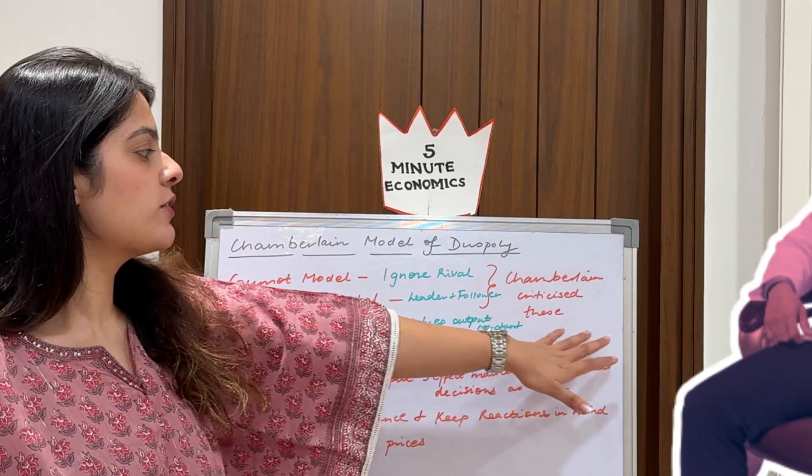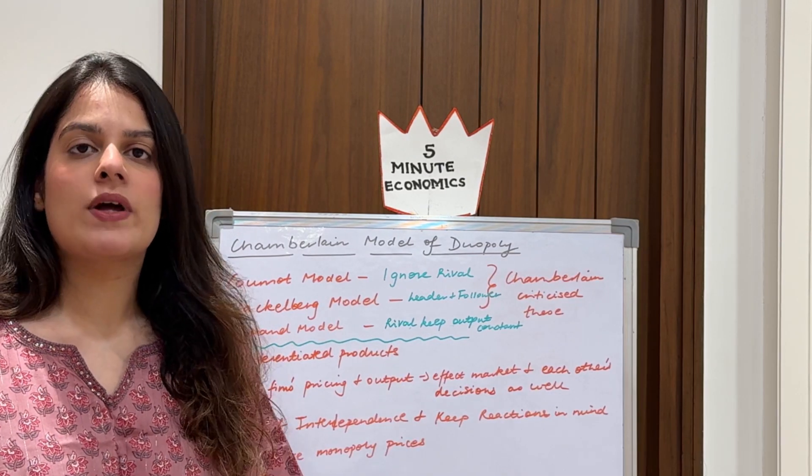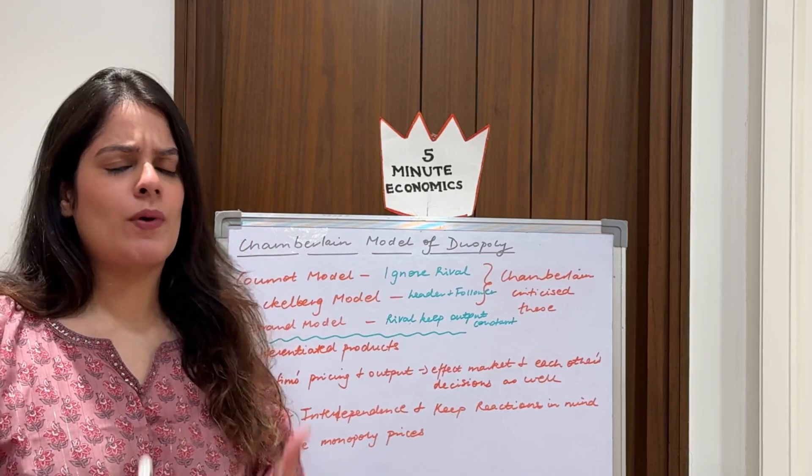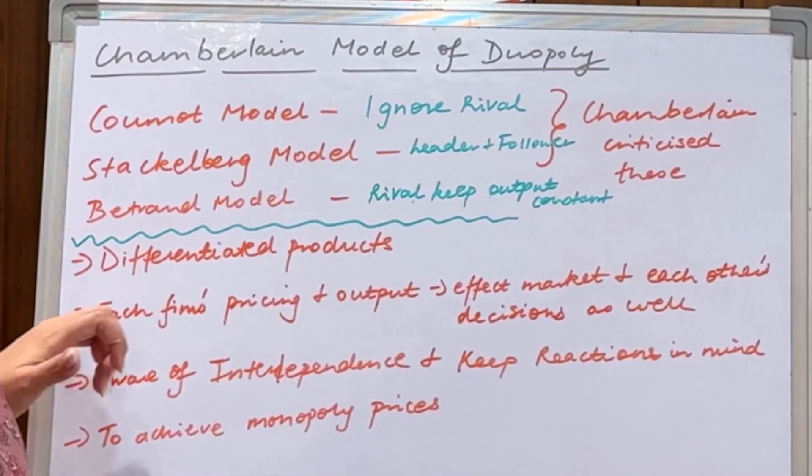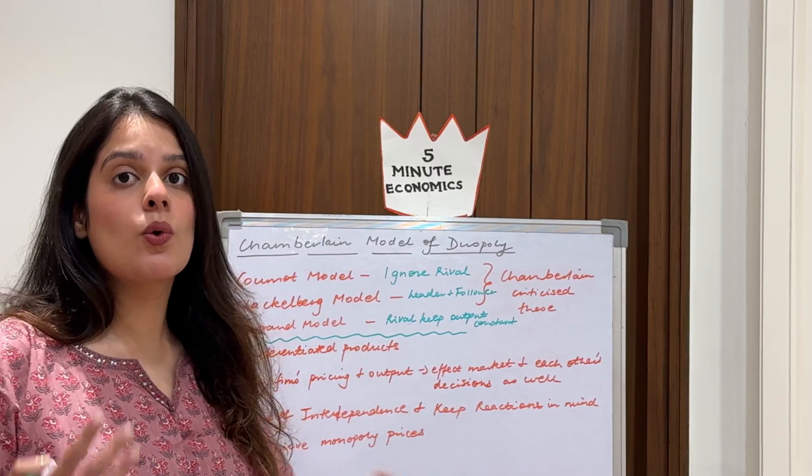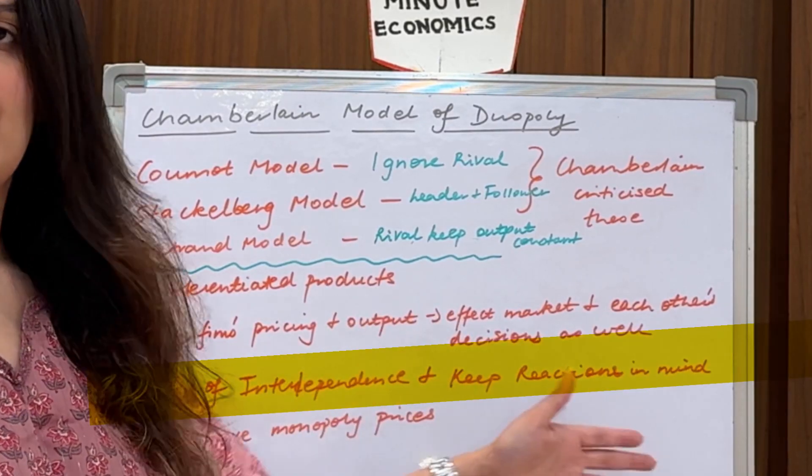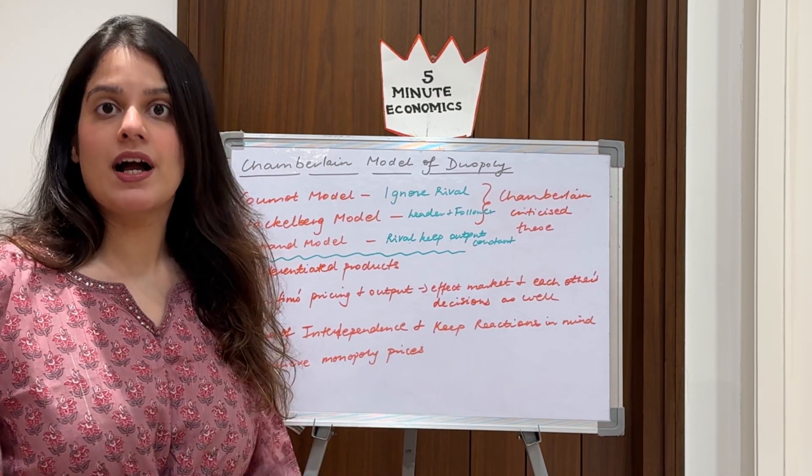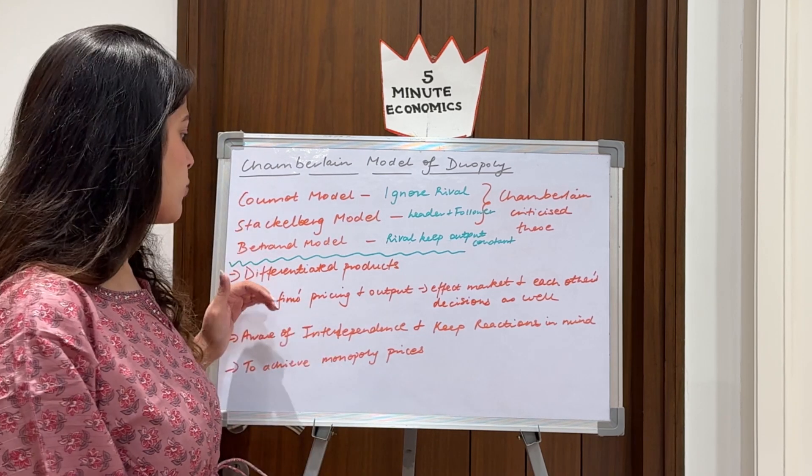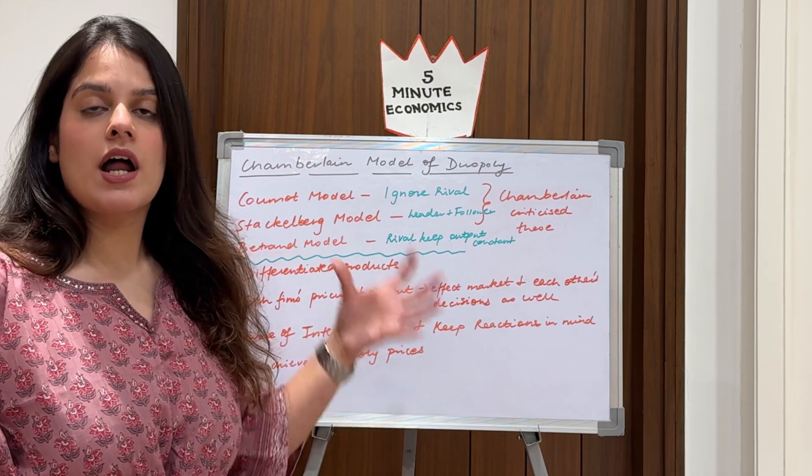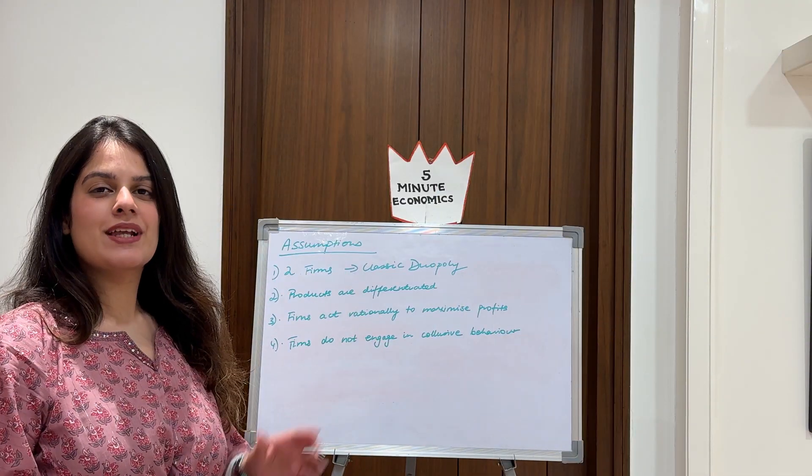Chamberlain criticized these models and gave a more practical approach where he said that the firms know their interdependence. They recognize that each firm's pricing and output will affect the market and each other's decisions as well. If they do so, they will of course achieve the monopoly prices, which is the highest price. And over here we have differentiated products, unlike homogeneous products which were already used. So this is why we are now studying Chamberlain, because these three models were criticized by him.